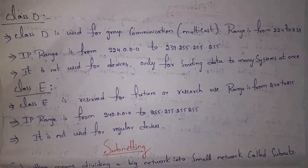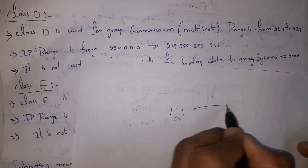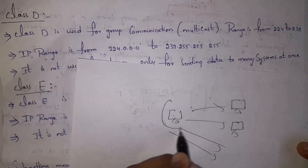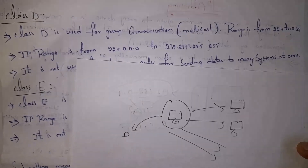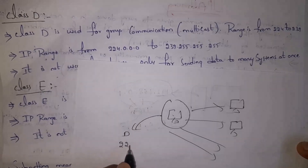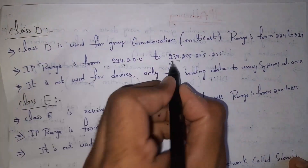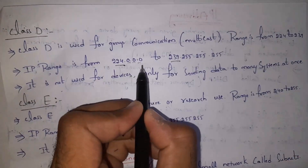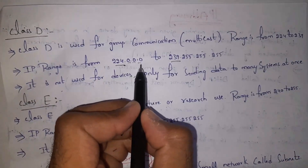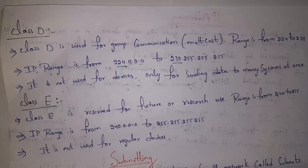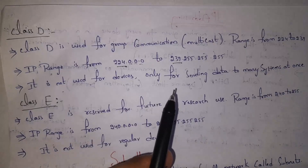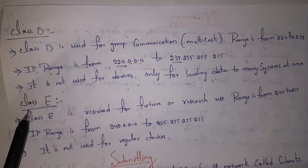The next one is Class D IP address. Class D is used for group communication, that is multicasting. Multicasting means if one computer wants to send data to many devices at once, it uses a Class D IP address. Class D IP address range is from 224 to 239. The second, third, and fourth numbers can be between 0 and 255. So Class D is used for group communications — for sending data to many systems.